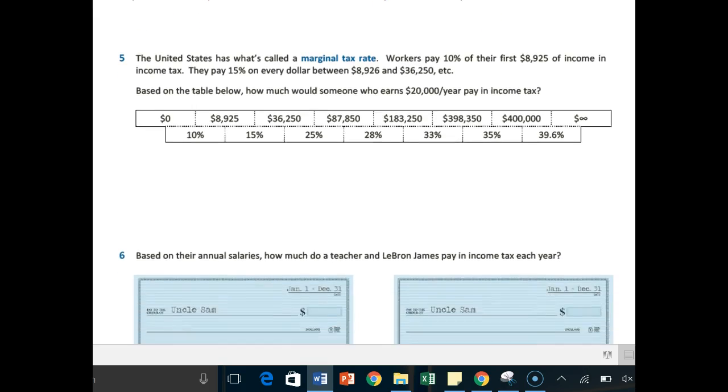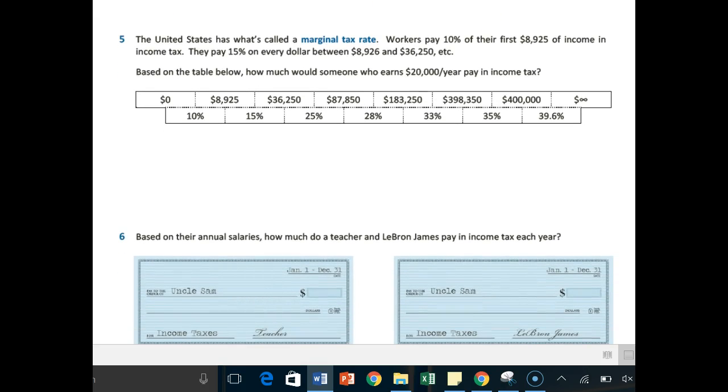Now we can move on to taxes. The United States has what's called a marginal tax rate, where workers pay 10% of their first $8,925 of income in income tax, then they pay 15% on every dollar between $8,926 and $36,250, et cetera. Based on the table below, how much would somebody who earns $20,000 a year pay in income tax?